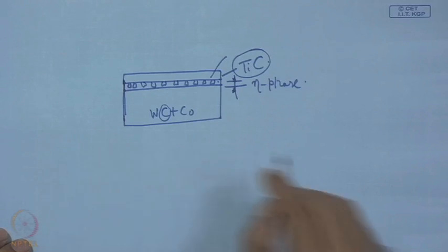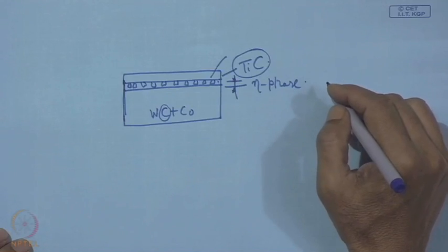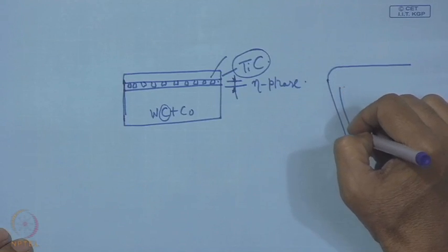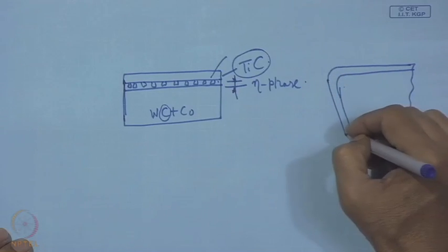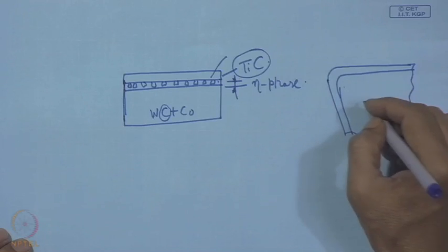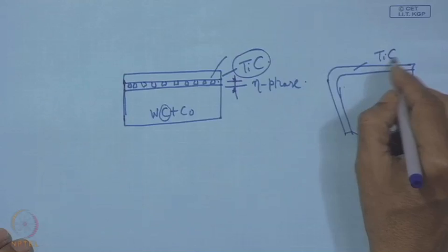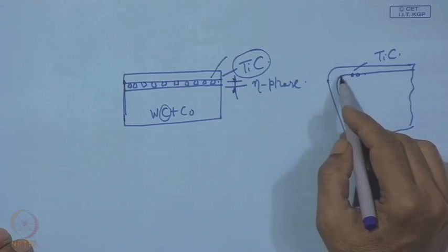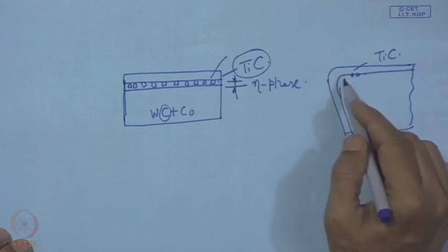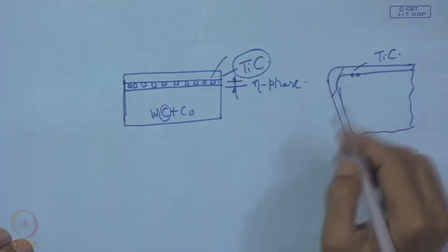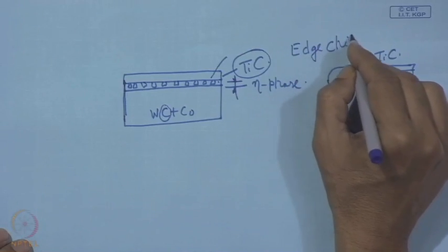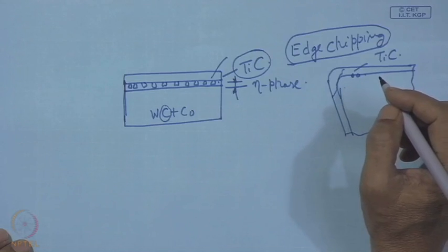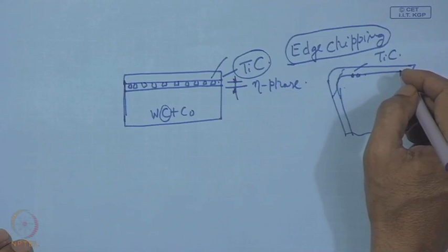One critical requirement of the cutting tool is cutting edge strength. In the cross-section of this tool, the coating is on top, the substrate is below, and at the interface there are voids and pores. When this comes in contact with the work surface during machining, the edge gets damaged — this is called edge chipping. Edge chipping becomes a major problem due to the very existence of eta phase, and this has to be solved for the tool to become a high performance tool.